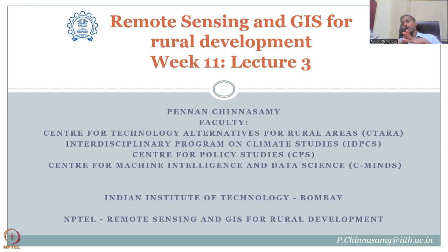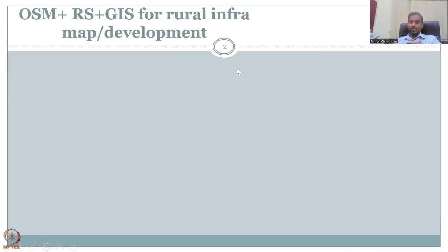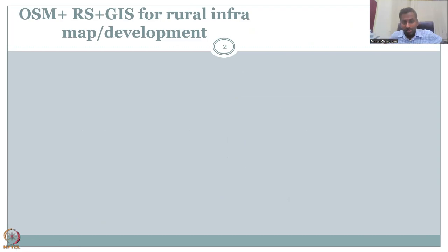We will then check on how research can be done further. In Week 11, Lecture 3, we will see how we can combine OSM, RS, and GIS — OpenStreetMap, remote sensing, and GIS interfaces — for rural infrastructure mapping and development.